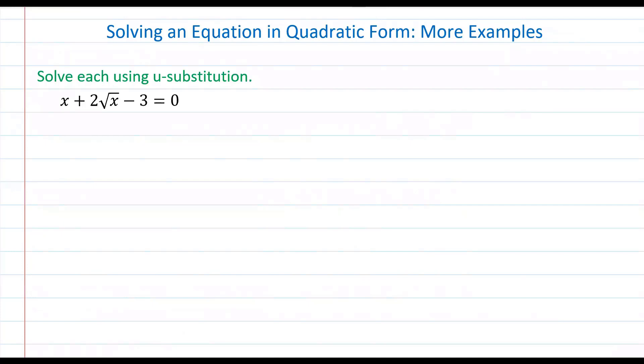Welcome back mathematicians. In this video we're going to solve an equation that's in quadratic form. So we have x plus 2 times the square root of x minus 3 is equal to 0.